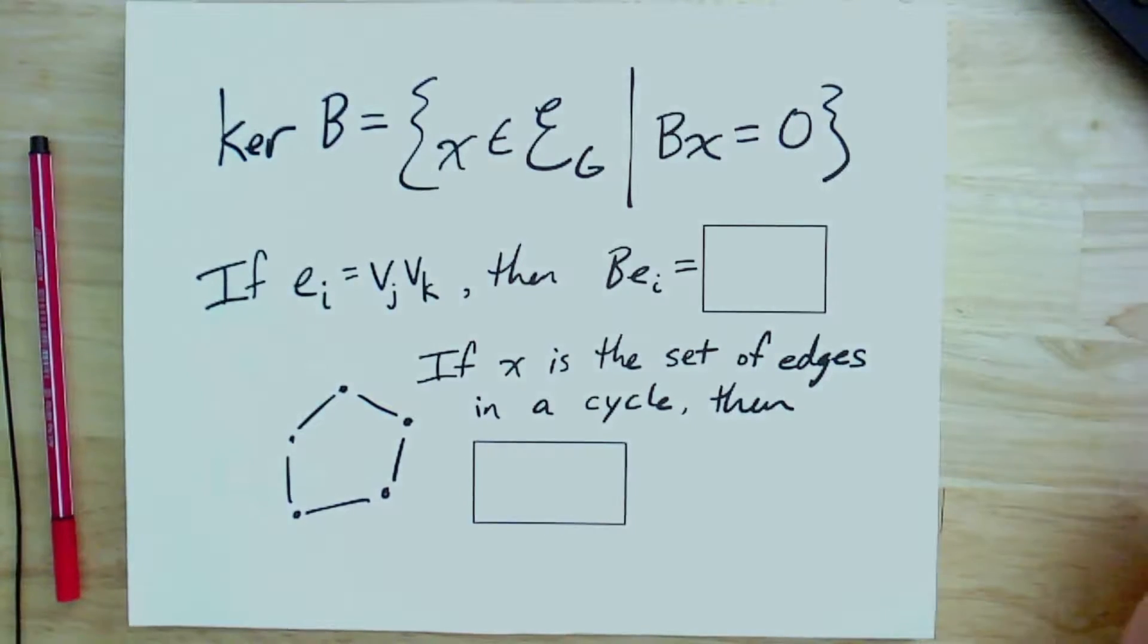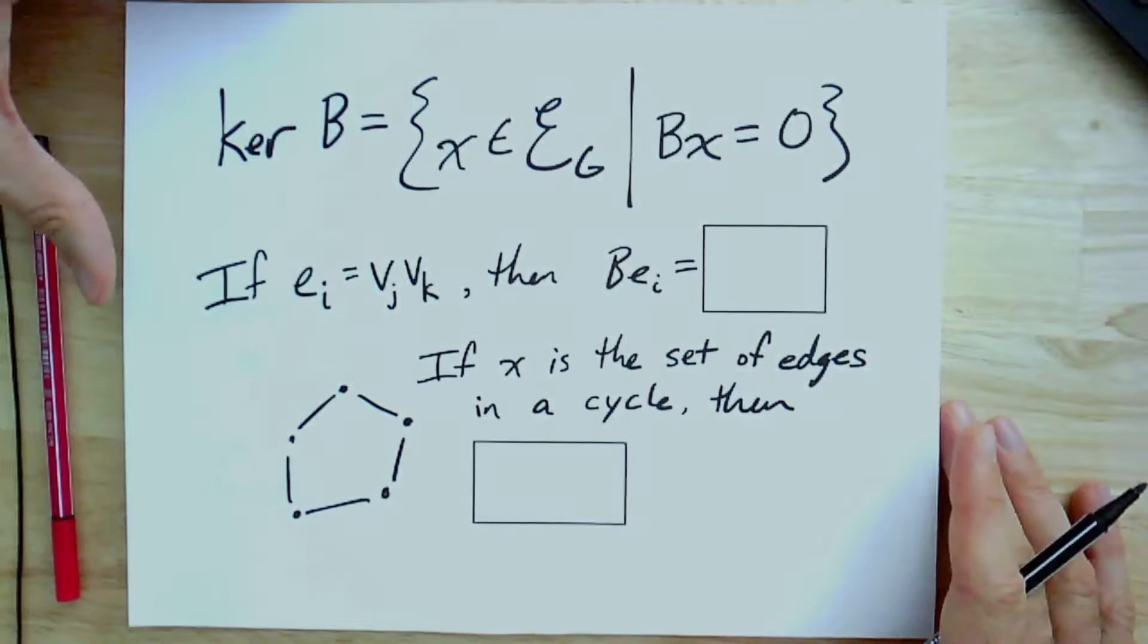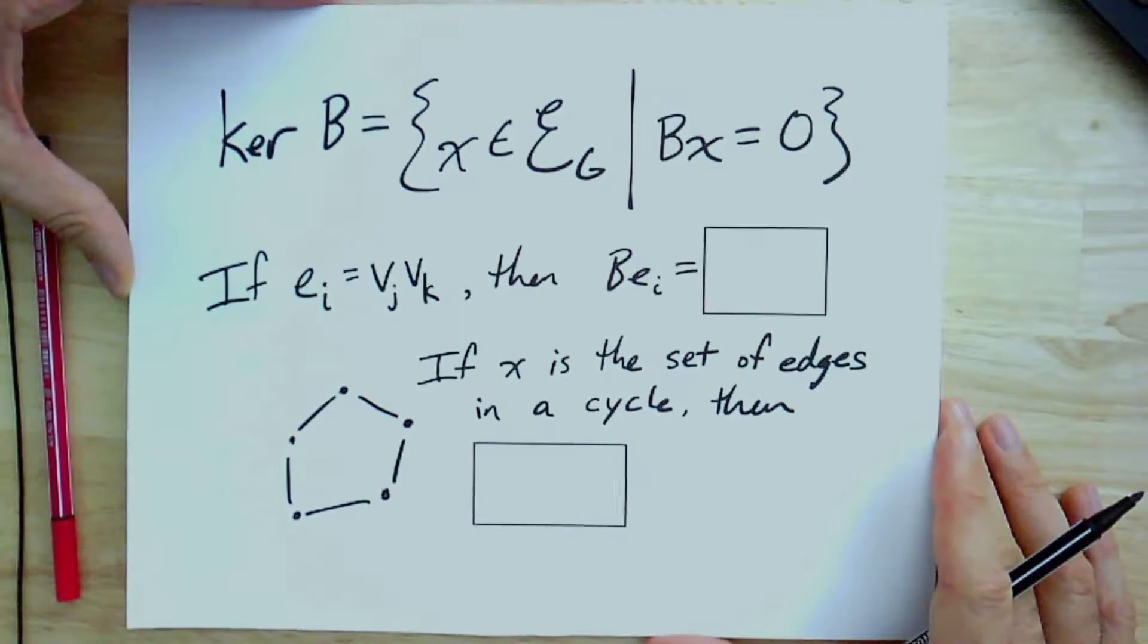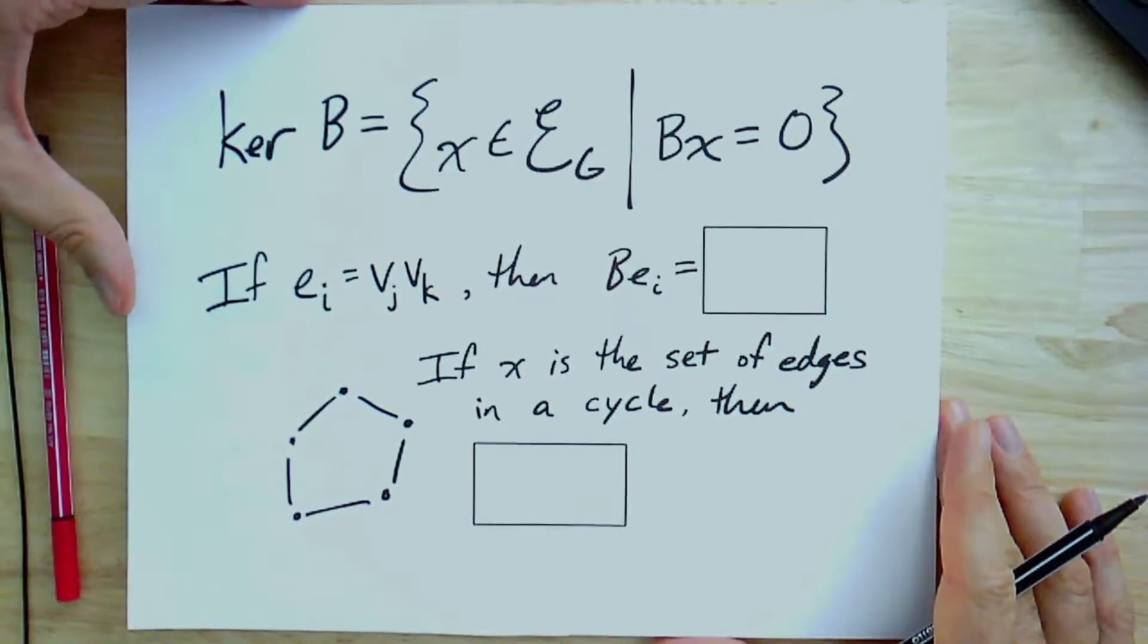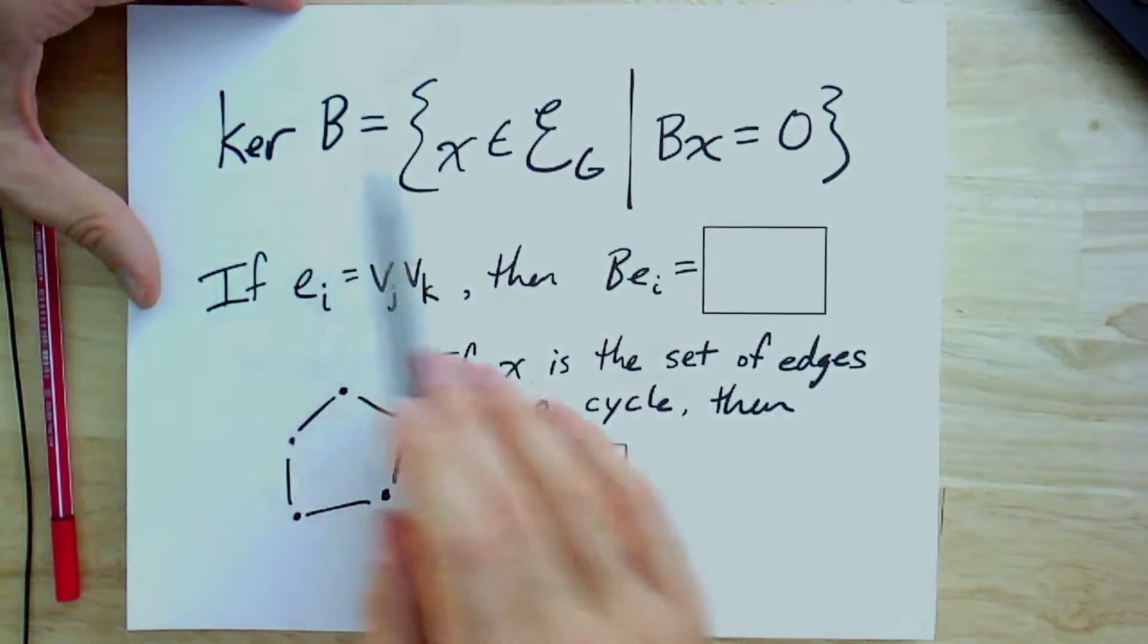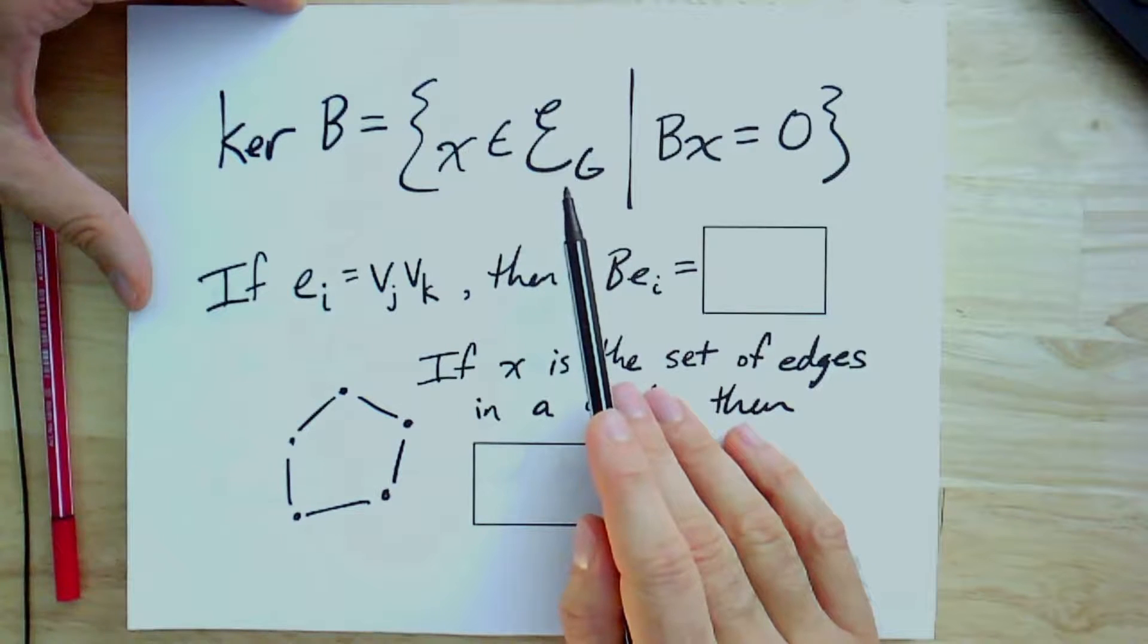And this is going to be the kernel of B. Hopefully you've seen this before, but in case you haven't, in linear algebra, the kernel of a linear operator is all the things that get mapped to zero. That's all the vectors that get mapped to zero. So B, as a linear transformation, maps from the edge space to the vertex space.